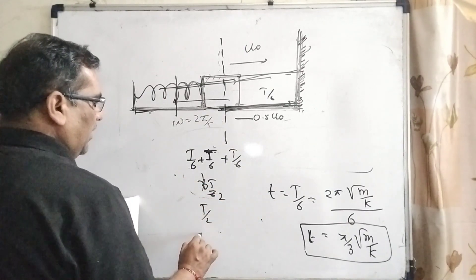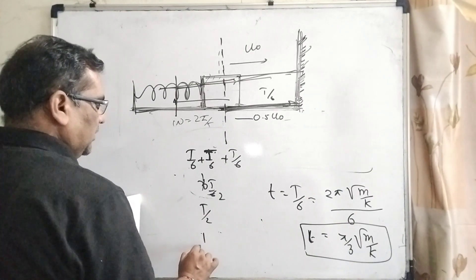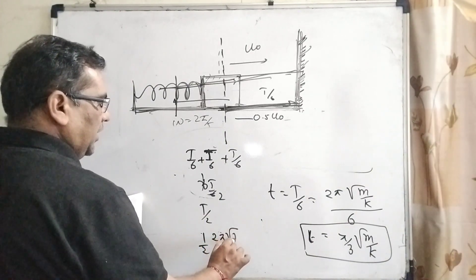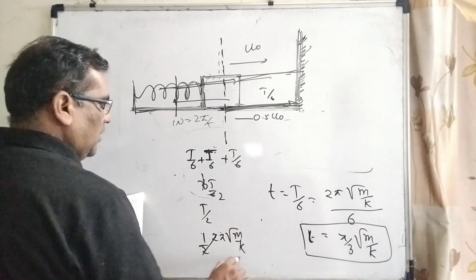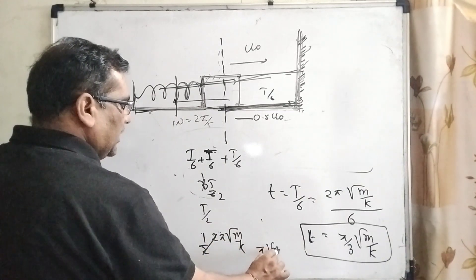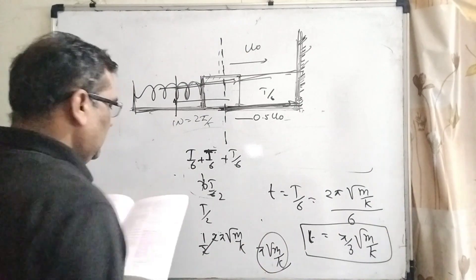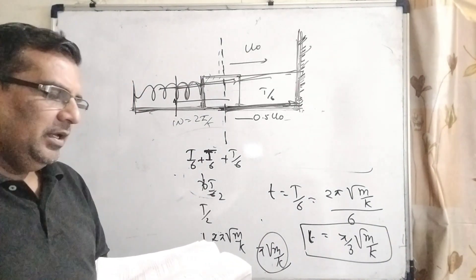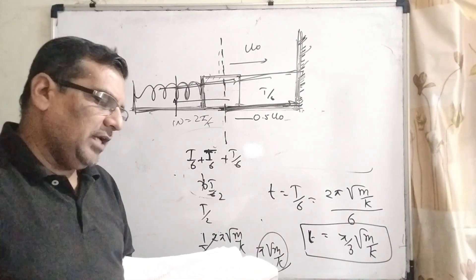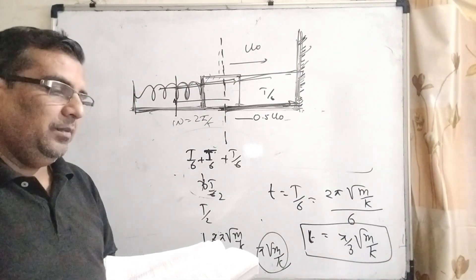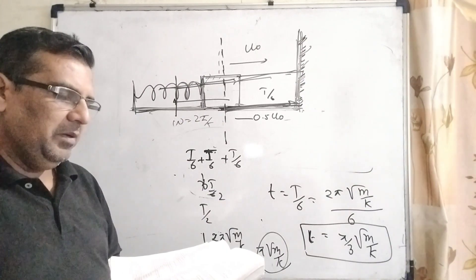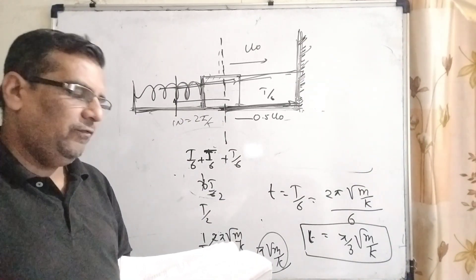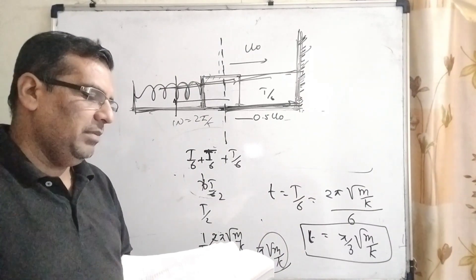Here we have already found out 1 by 2. What is the value of T? 2 pi root m by k, then cancel out, this is pi root m by k. So therefore this condition is also not possible. And lastly we have given the time at which the particle passes through the equilibrium position for the second time is t equal to 5 pi by 3 root m by k.